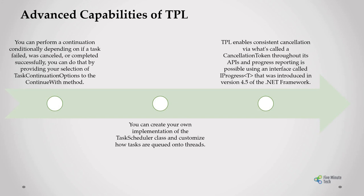TPL also enables consistent cancellation using what is called a cancellation token throughout its APIs. Progress reporting is possible using an interface called IProgress of T, which was introduced in version 4.5. You can also create your own implementation of the task scheduler class to customize how tasks are queued into threads.